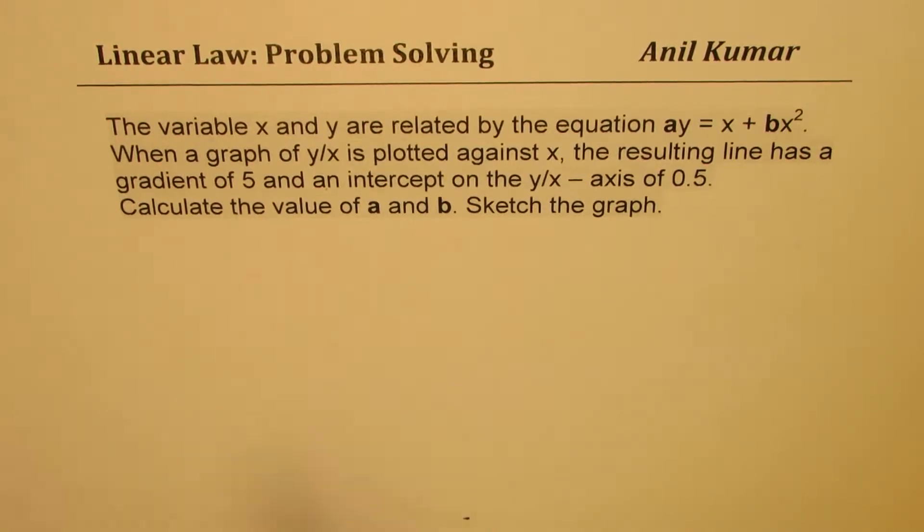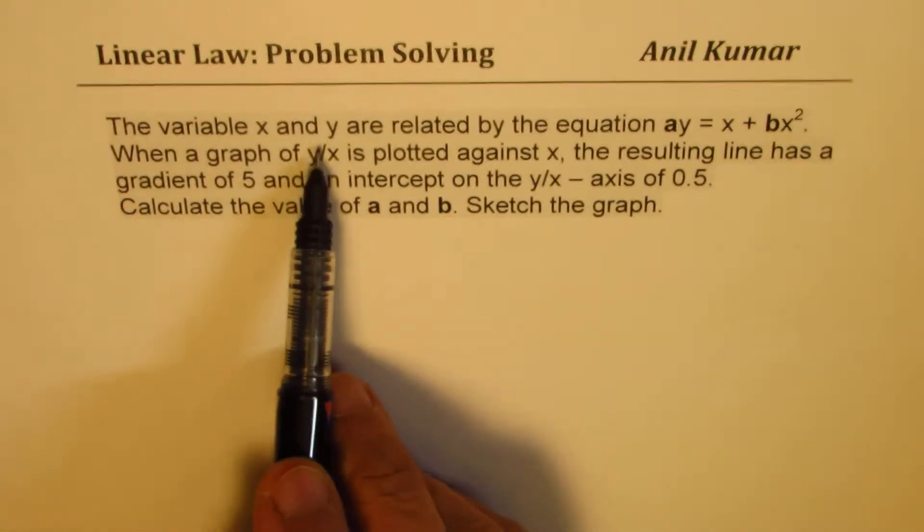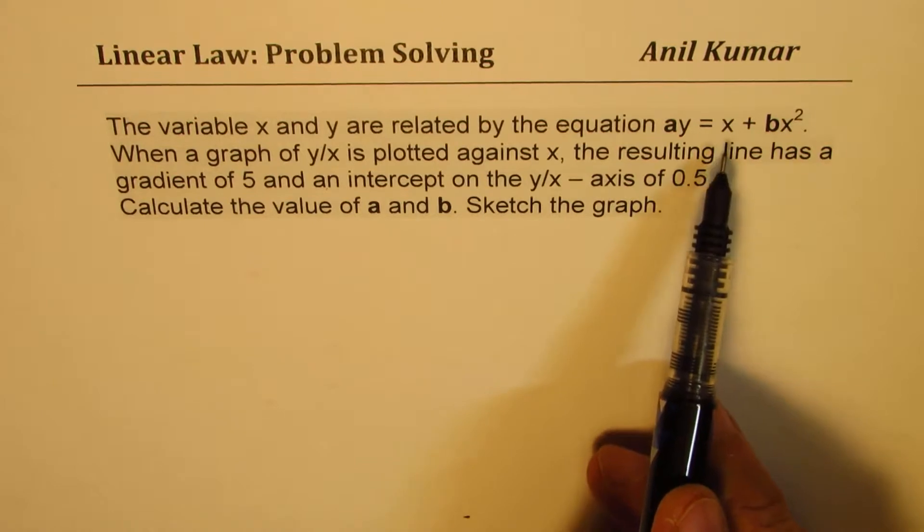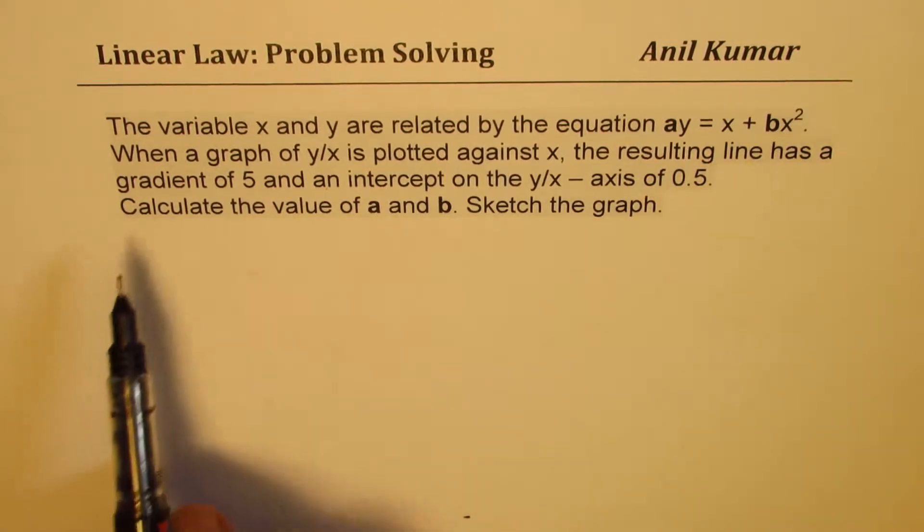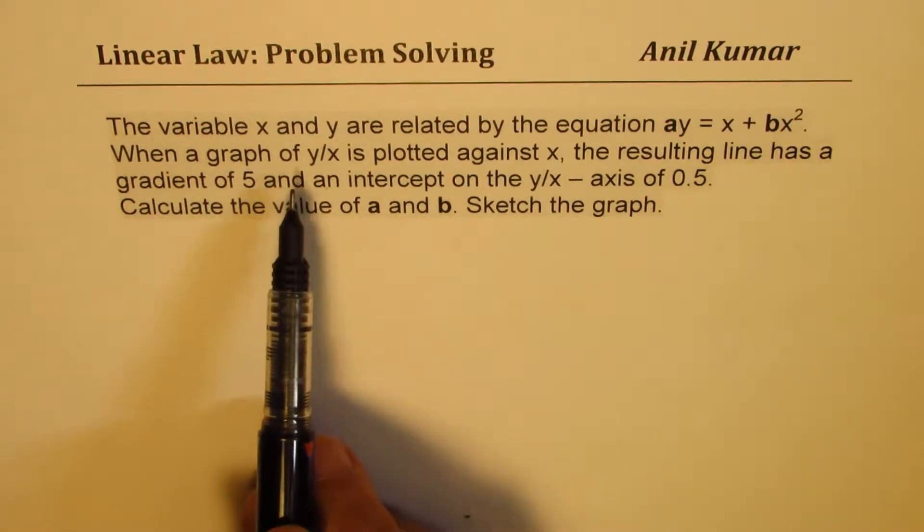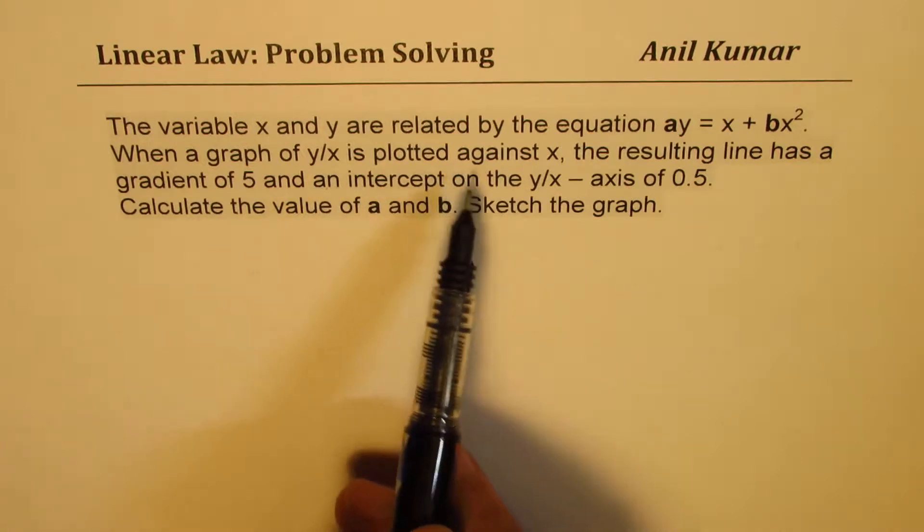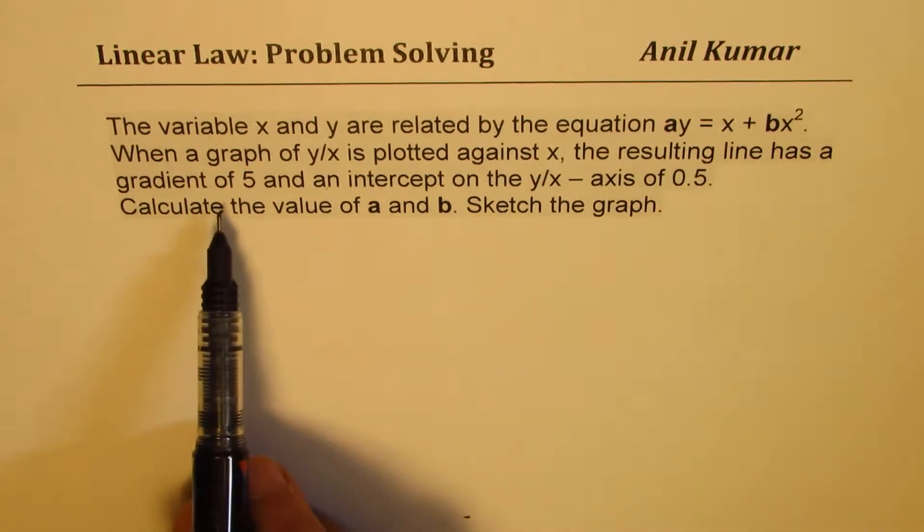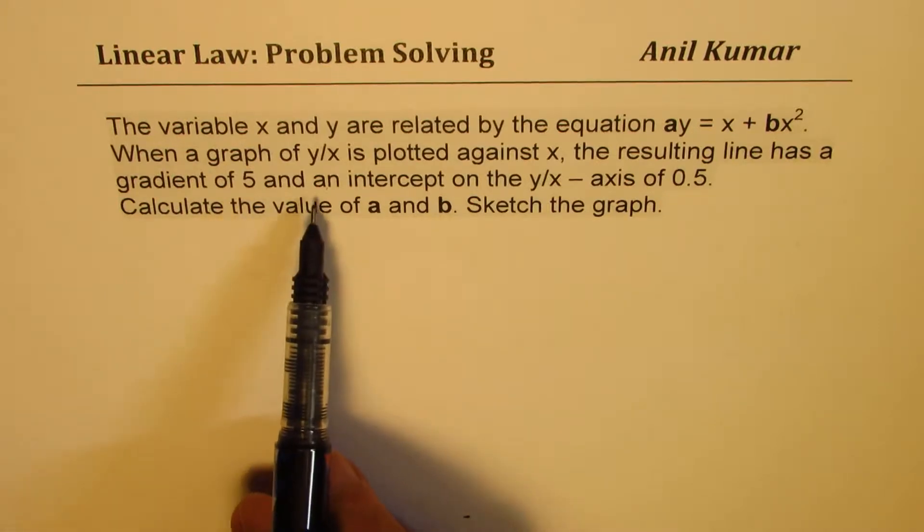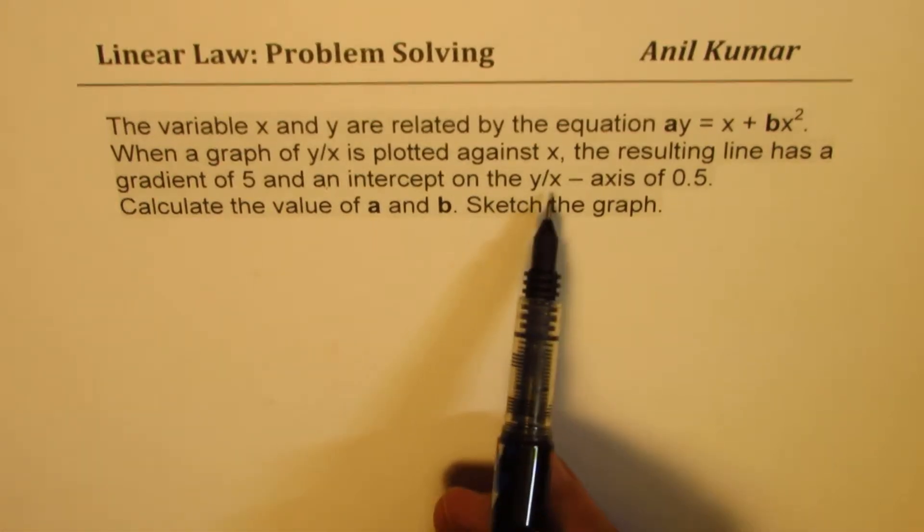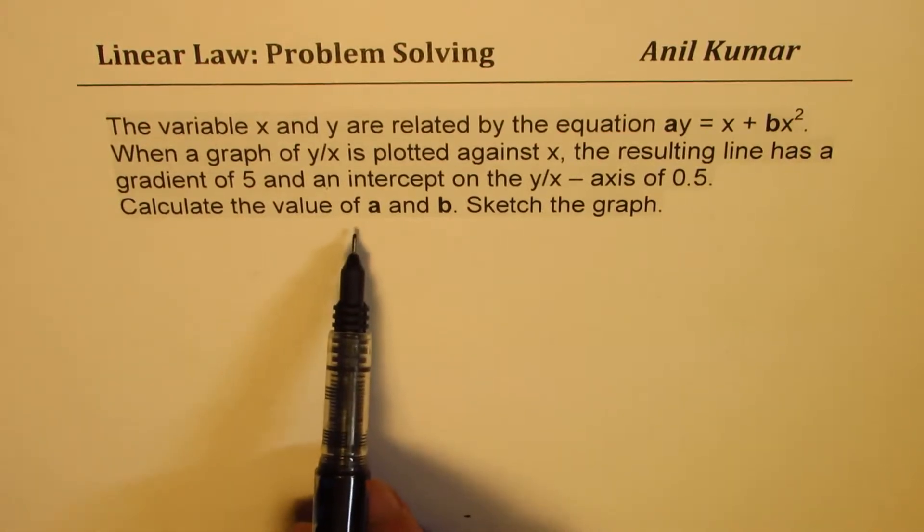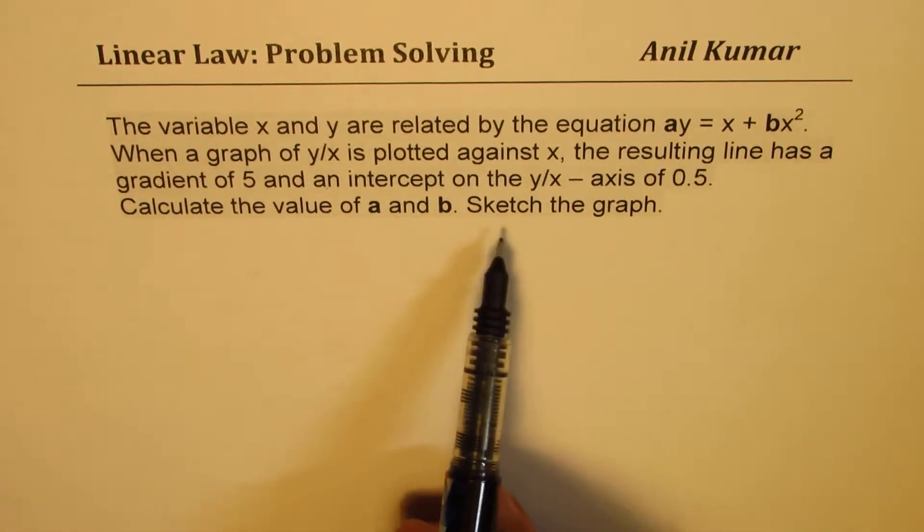The question here is, the variables x and y are related by the equation ay equals to x plus bx². When the graph of y/x is plotted against x, the resulting line has a gradient of 5 and an intercept on the y/x axis of 0.5. Calculate the value of a and b and sketch the graph.